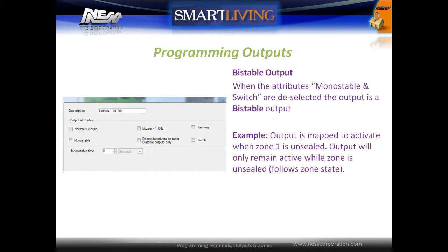When the attributes Mono Stable and Switch are deselected, the output is considered a bistable output. An example: if an output is mapped to activate when zone 1 is unsealed, the output will only remain active while the zone is unsealed — essentially the output will follow the event that is triggering it.